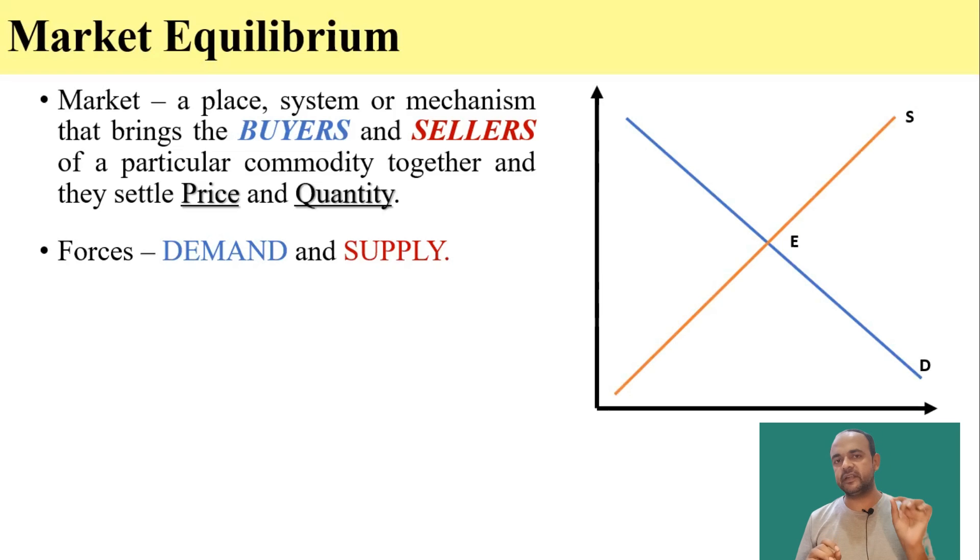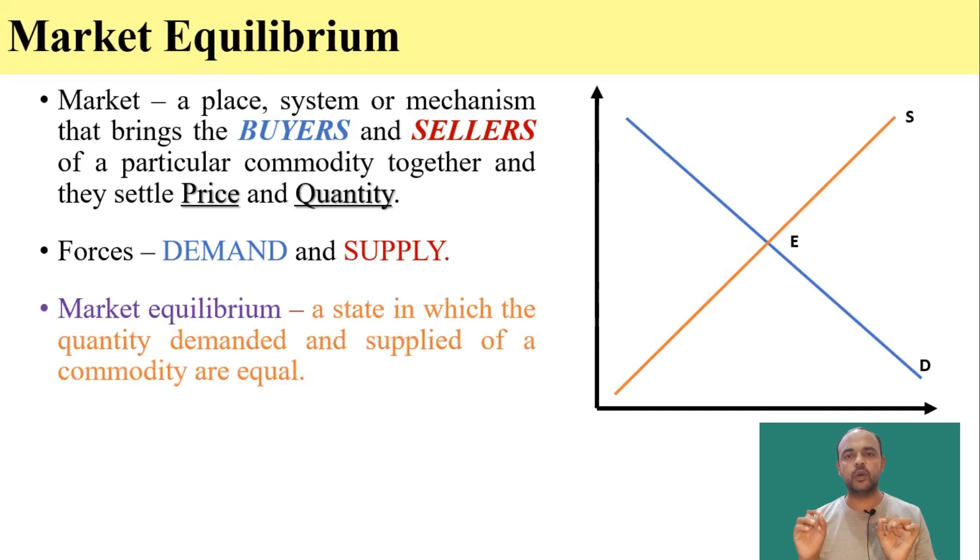So here where the quantity demanded is equal to quantity supplied is a state where we can say that this market is in equilibrium. And as we know that in equilibrium, there is no tendency for the change to occur.